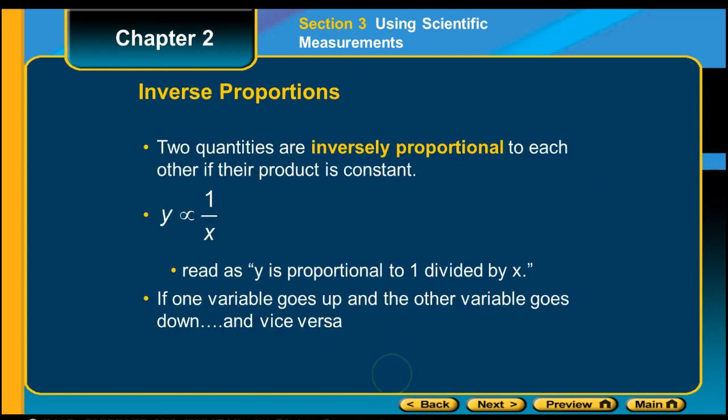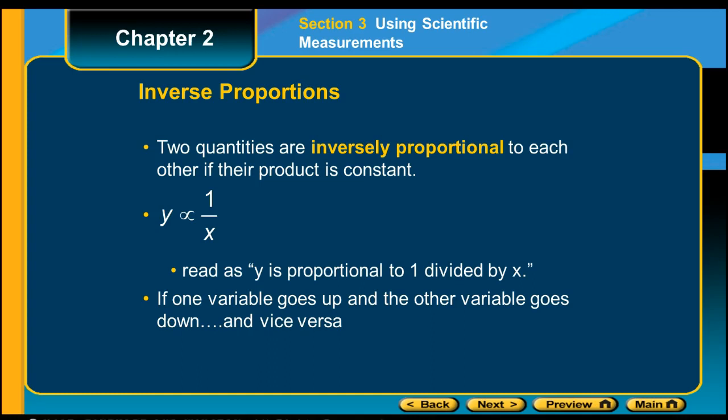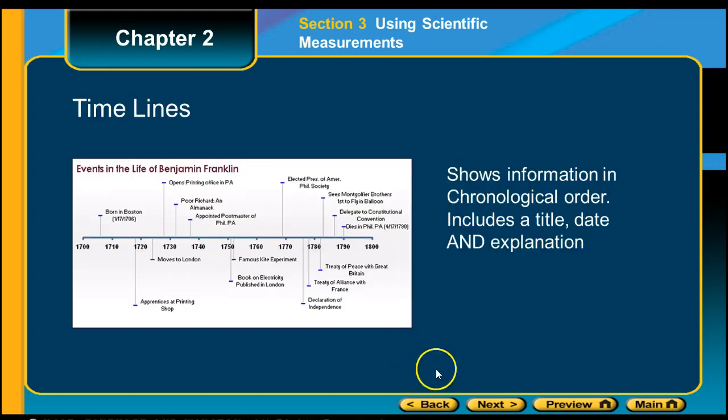Inverse proportions, when they're inversely proportional, also known as indirect, means that if one variable goes up, the other variable goes down. Indirect doesn't mean that there's no relationship and it's random. Indirect means that if you increase one variable, the other variable will decrease. Here is an example. This one is a curve. You can see a line. So as I increase my pressure, my volume decreases. This is inversely proportional or indirect.